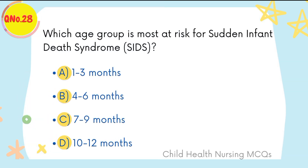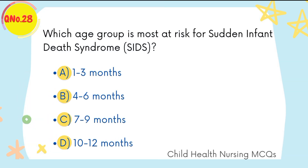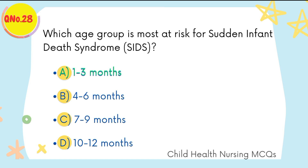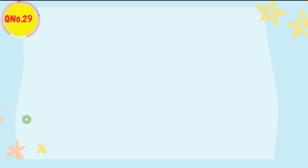Question number twenty-eight: which age group is most at risk for sudden infant death syndrome (SIDS)? A is the right option: one to three months.